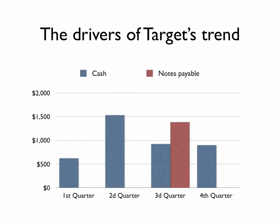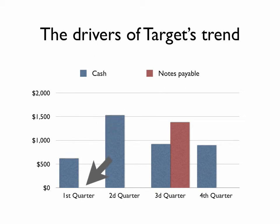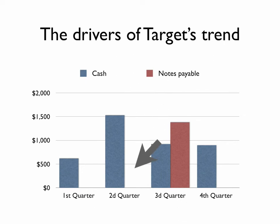A look at the drivers explains the trend in Target's liquidity position. There are cash balances in the first quarter, but no short-term borrowings. Cash increases in the second quarter, and there's still no short-term debt. That drives the liquidity position higher.